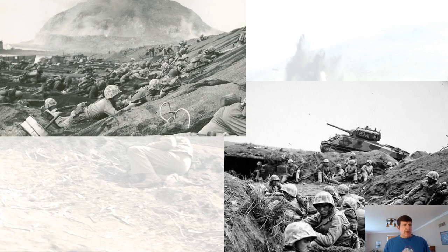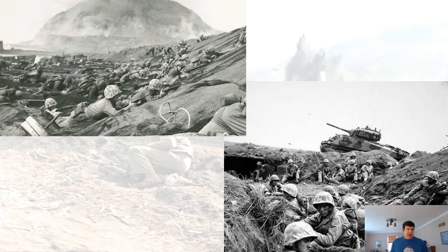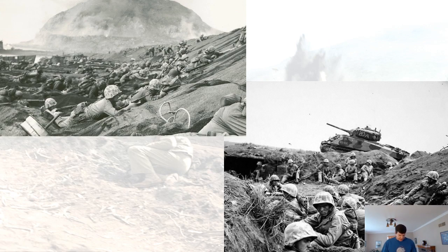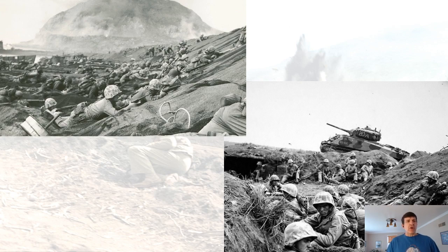On Iwo Jima, marines were huddled on the volcanic ash — still hot from fissures below. The ash was thick, heavy, and hard to dig into. Here's a marine tank, you can see Suribachi where Japanese guns could train right down upon them. Much of the attack was to take this massive mountain — literally through bunker by bunker, small one-man bunkers, little holes they called spider holes.